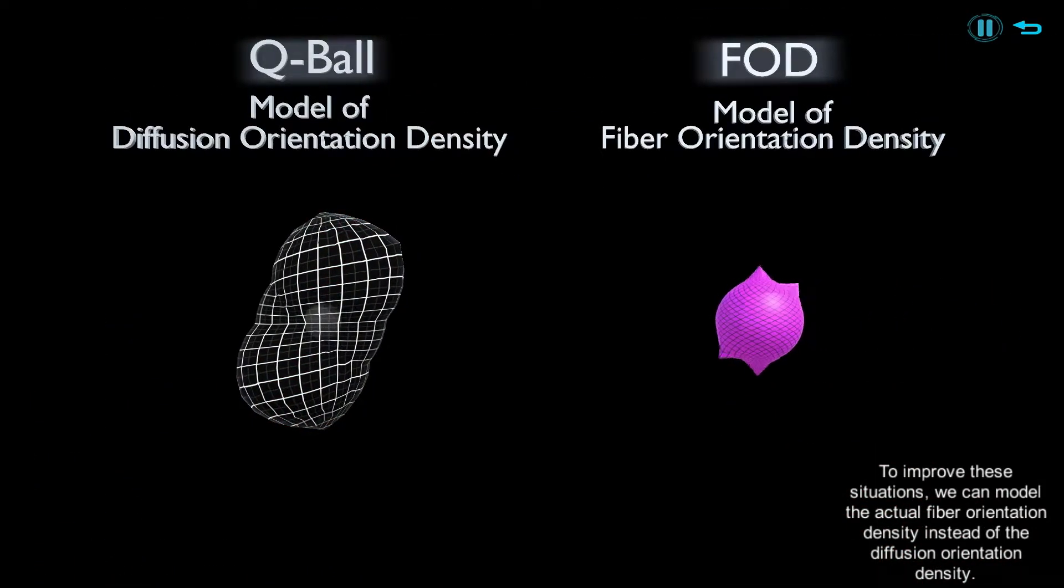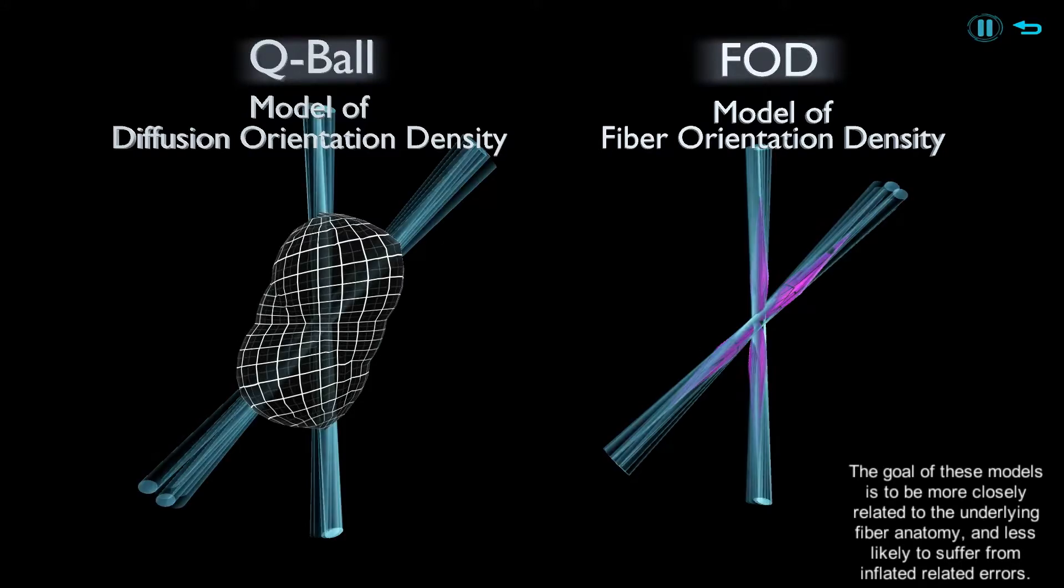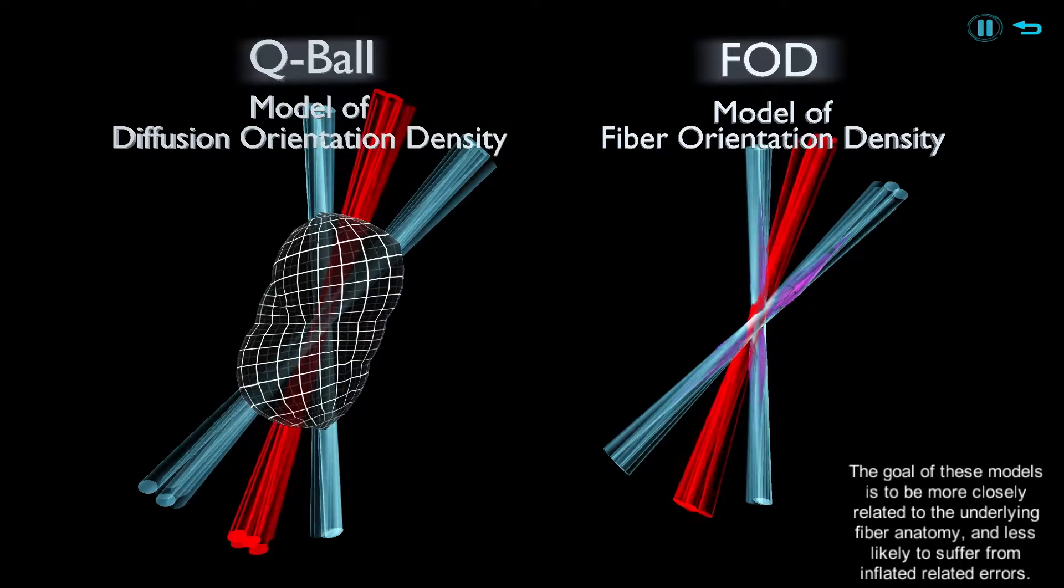we can model the actual fiber orientation density instead of the diffusion orientation density. The goal of these models is to be more closely related to the underlying fiber anatomy and less likely to suffer from inflation-related errors.